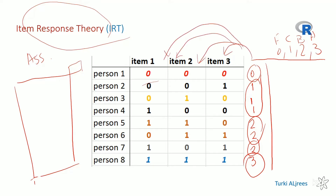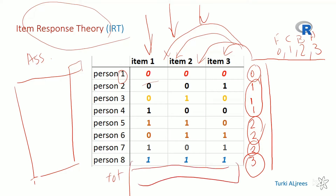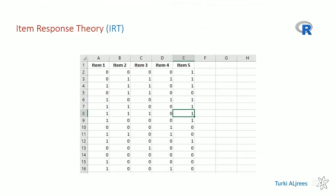Item Response Theory will give us back a numeric result telling us about each item. A total score alone — a scale or score — is not enough. I need an approach that handles this statistically; you cannot do it manually. You have to use Item Response Theory. Also, the data could be much larger — you could have up to 100 items.